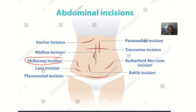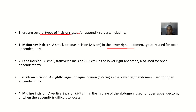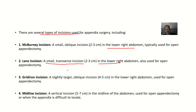Then we have the Lanz incision. This one is a small transverse incision, still 2 to 3 centimeters, and it is done at the lower right abdomen. It is also used for open appendectomy.